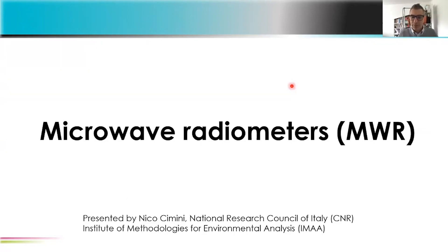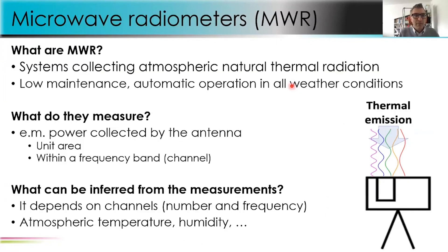Let's start with microwave radiometers. What are they? Microwave radiometers are systems collecting atmospheric natural thermal radiation. The hardware is low maintenance and provides automatic operation in all weather conditions. What do they measure? They measure electromagnetic power collected by the antenna per unit area and within a frequency band, and those are called channels.